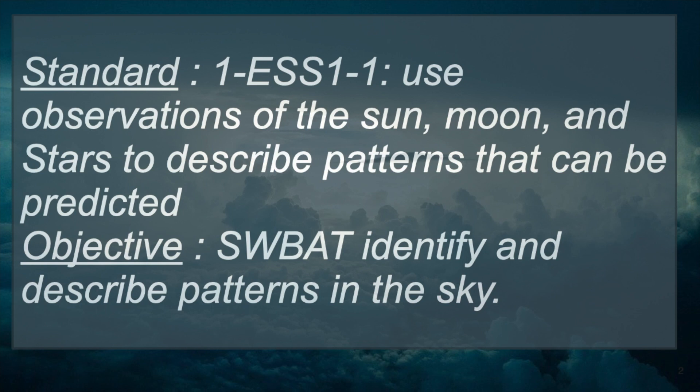Our standard for this week is being able to use observations of the sun, moon, as well as the stars to describe patterns that can be predicted. Based on objects occurring in the sky with the sun, moon, and stars, scholars will be able to understand what's going on with the stars based off their patterns. The objective of the lesson is that students will be able to identify and describe patterns in the sky. My standard and objective tie in hand-to-hand — our initial goal is to understand what's occurring in the sky.